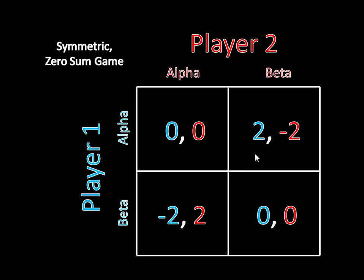The same logic applies where player one is winning with two and player two is losing with negative two — player two can switch from her losing strategy, beta, to copying player one's strategy, alpha, which is a profitable deviation. Now, it's not the case that just any outcome producing a payoff of zero for both players is a Nash equilibrium. Both players playing beta gives zero, but that's not a Nash equilibrium — player one could play alpha instead and earn two. The rule is a necessary condition, not a sufficient one. The outcome where both play alpha is a Nash equilibrium: player one doesn't want to switch to beta and drop from zero to negative two, and player two doesn't want to switch from alpha to beta and drop to negative two.